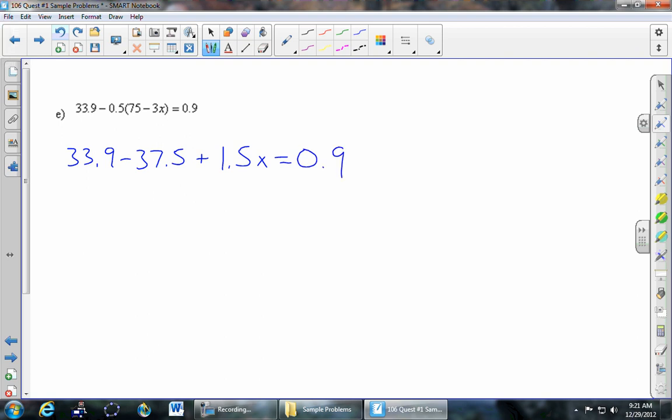And then we're going to combine terms. So 33.9 minus 37.5. Just be really careful as you do this. So let's see. What do we get here? I think it's 0.6. Maybe 3.6. And then we'll copy everything else.